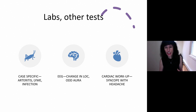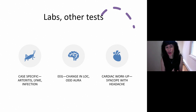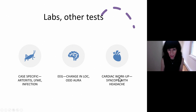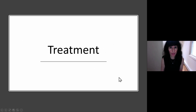Would you want to do an EEG? If there's any change in level of consciousness, or if there's an aura that's odd — like an olfactory aura that's not typical for migraine — that might be helpful. If somebody's having syncope with their headaches, you'd definitely want to do a cardiac workup.